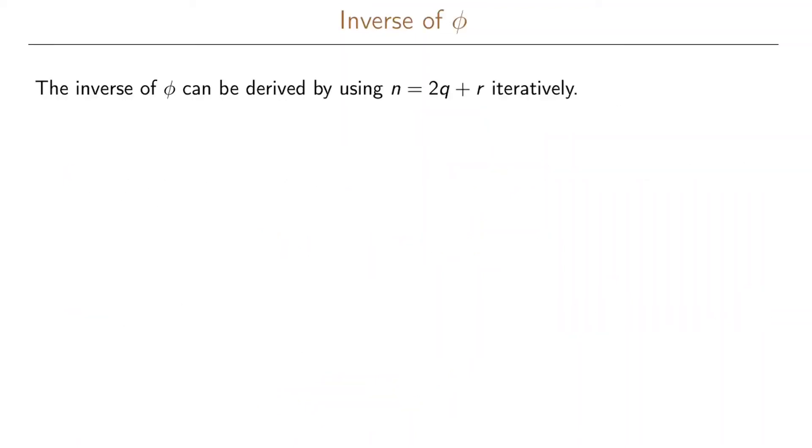If we want to go from our ordinary base 10 format into the binary form we need to find the inverse of our function that we call phi. The inverse of this function can be derived using the fact that we can write the number n as 2 times q plus the remainder r and since the remainder is less than our divisor then r will be in the set 0 or 1.